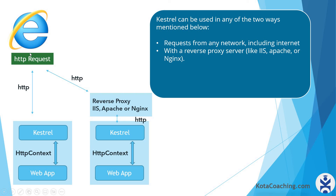If you see here, when a request comes from the browser, Kestrel handles this request if you are running directly from the network including the internet. Kestrel will then create an instance of HTTP context and pass it to the web application. The web application responds back with the output to Kestrel, and Kestrel sends this output to the user. That is the direct process.